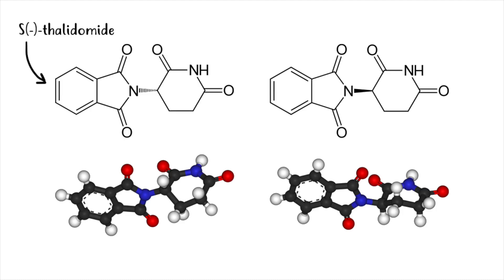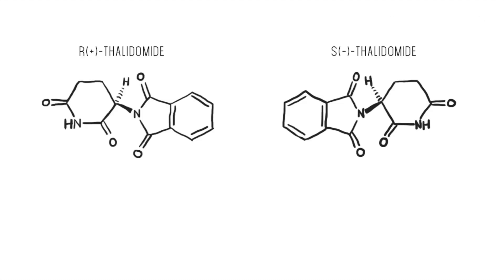However, once a thalidomide capsule was digested, the pregnant women would be provided with both S-thalidomide and R-thalidomide. Both the left and right versions are mirror images of each other.